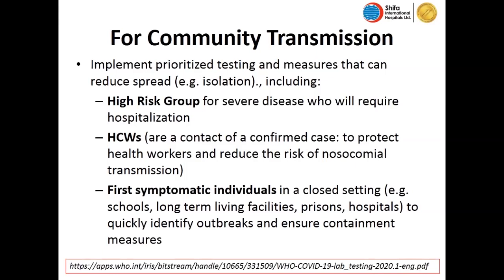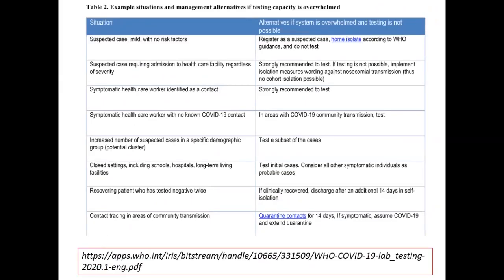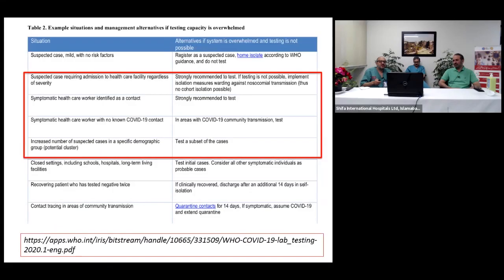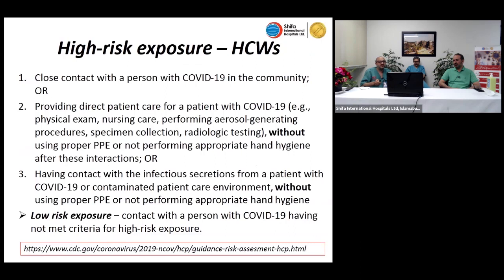Looking at the WHO table of categories for testing: suspected cases requiring hospital admission are strongly recommended to test; symptomatic healthcare workers identified as a contact are strongly recommended to test; healthcare workers with no contact in areas with COVID transmission should also be tested. For healthcare workers, those in close contact with COVID-19 in the community or providing direct patient care are high-risk.